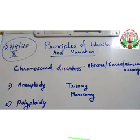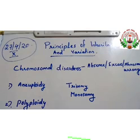In the last video we discussed about mutations happening in genes, or point mutations. Point mutations are those that take place in a gene due to a change in a single nucleotide sequence. They are also known as Mendelian disorders as they follow the Mendelian pattern of inheritance.